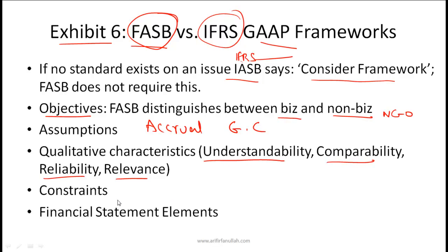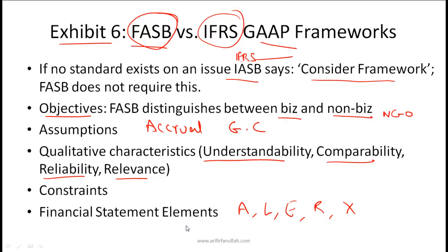As far as constraints are concerned, there isn't really any difference between FASB and IFRS. In terms of financial statement elements, both have the core elements of assets, liabilities, owners' equity, revenue, and expenses, but there are other subtleties that are slightly different between the two frameworks. Here again on Exhibit 6, page 118, I would encourage you to read the half page on this.